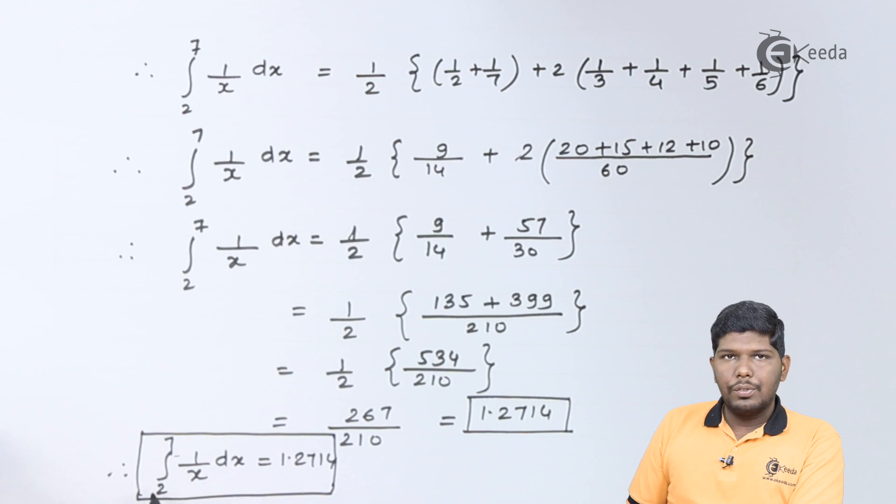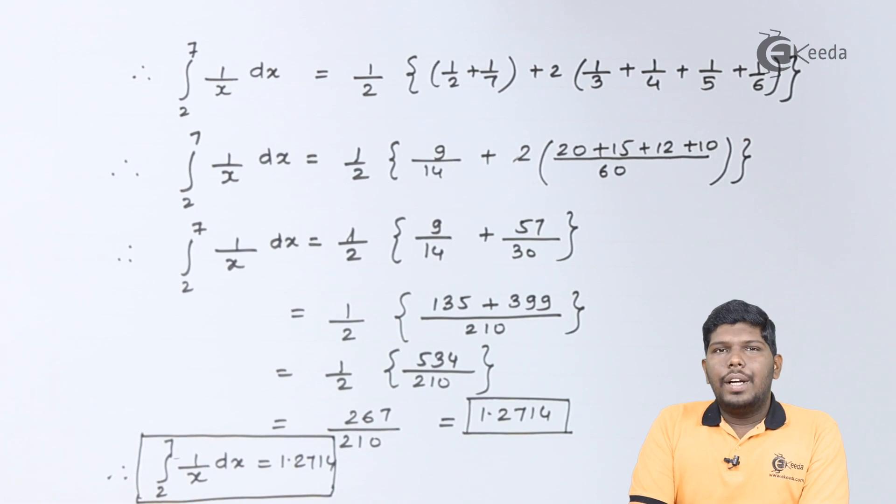Therefore integral of 1 by x from 2 to 7 will be equal to approximately 1.2714. This is our final answer. I hope friends you have understood this problem. Thank you for watching this video. Stay tuned with eGida and subscribe to eGida.